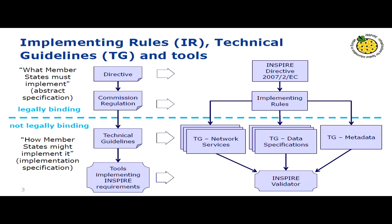The directive is complemented by implementing rules and technical guidance. Implementing rules are legally binding documents that tell what member states must do — covering metadata, data sets organized in 34 spatial data themes covering environmental topics, and services including discovery, view, and download services. Technical guidelines are not legally binding but explain from a practical and technical point of view how member states can satisfy the legal requirements, making explicit reference to OGC standards.